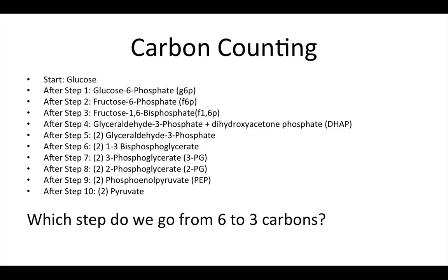Now let's talk about carbon counting, which we've already touched on. Starting with glucose, after step one the product is G6P, glucose 6-phosphate, then after step two and so on all the way to step ten — where molecules in parentheses show we now have two of them. At that point we have two three-carbon molecules. So which step do we go from six carbons to three carbons? Step four.